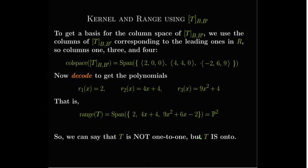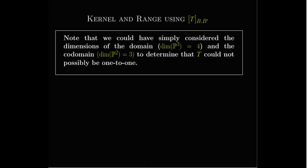We didn't actually need to find a basis for the null space to conclude T is not one-to-one. The dimension of the domain P3 is 4, which is larger than the dimension of the codomain P2, which is 3. Since the output space is not large enough, the only way to map the entire input space is to have more than one vector in the input map onto the same vector in the output — which means T cannot be one-to-one.